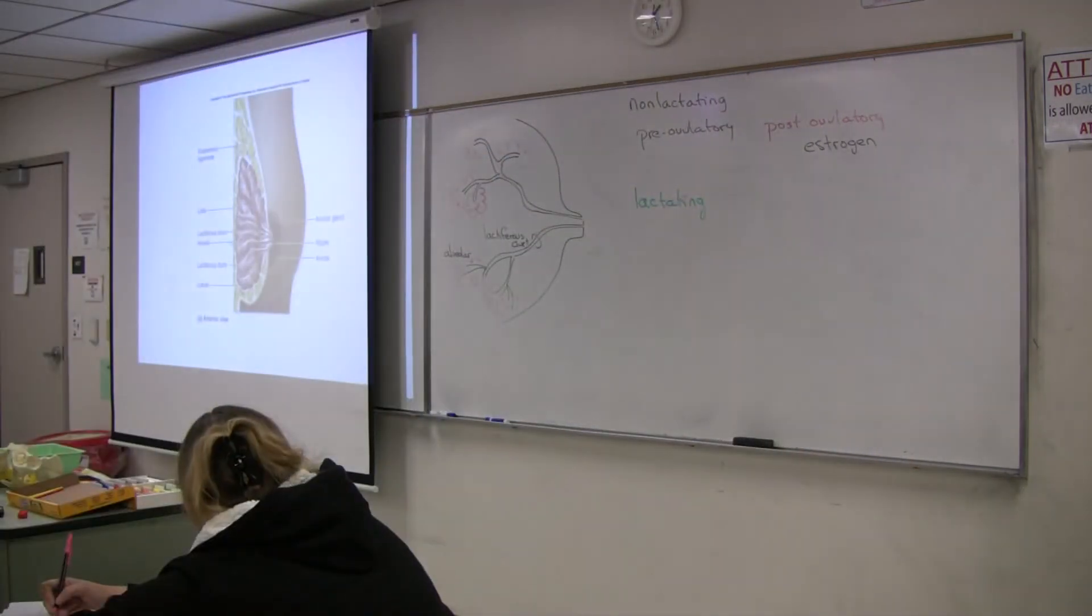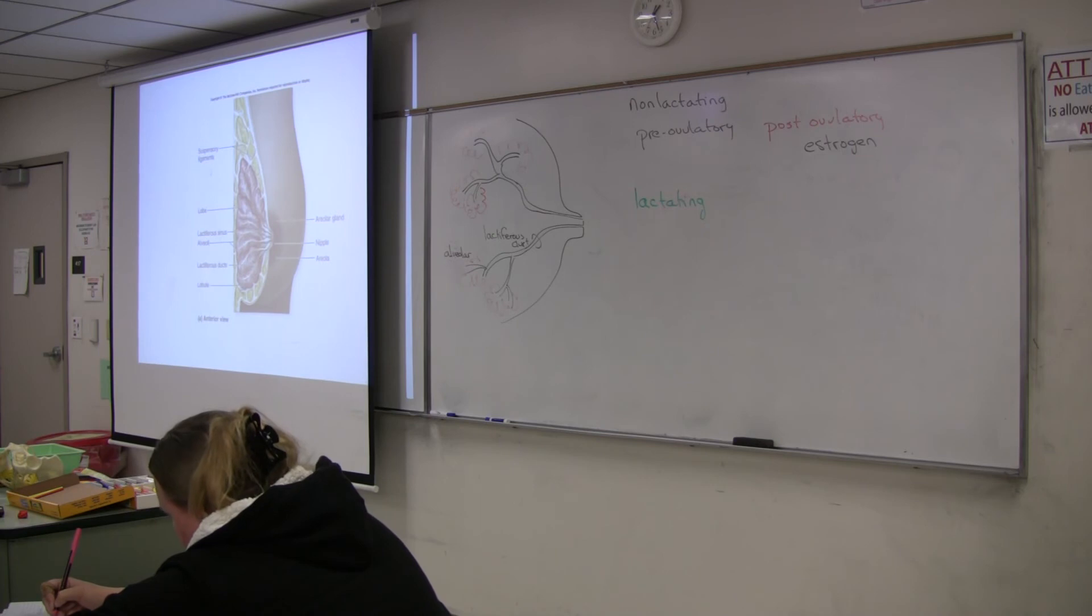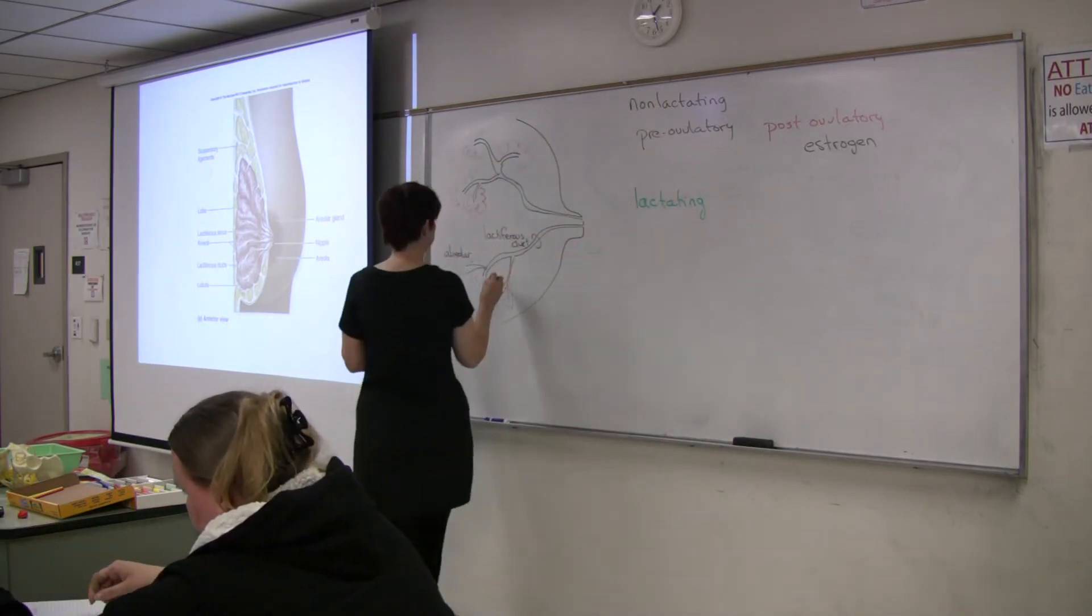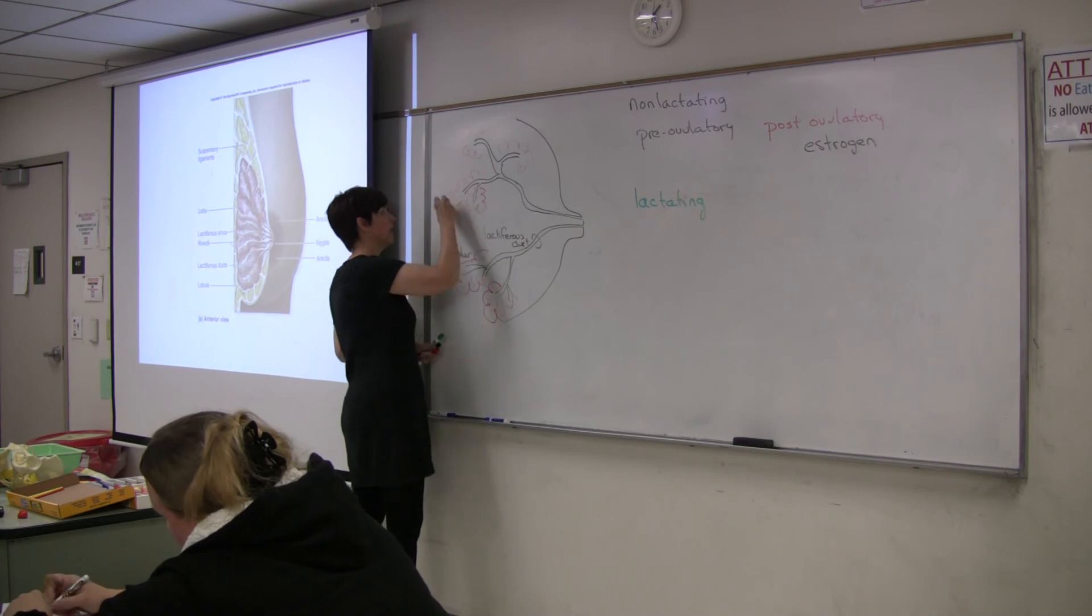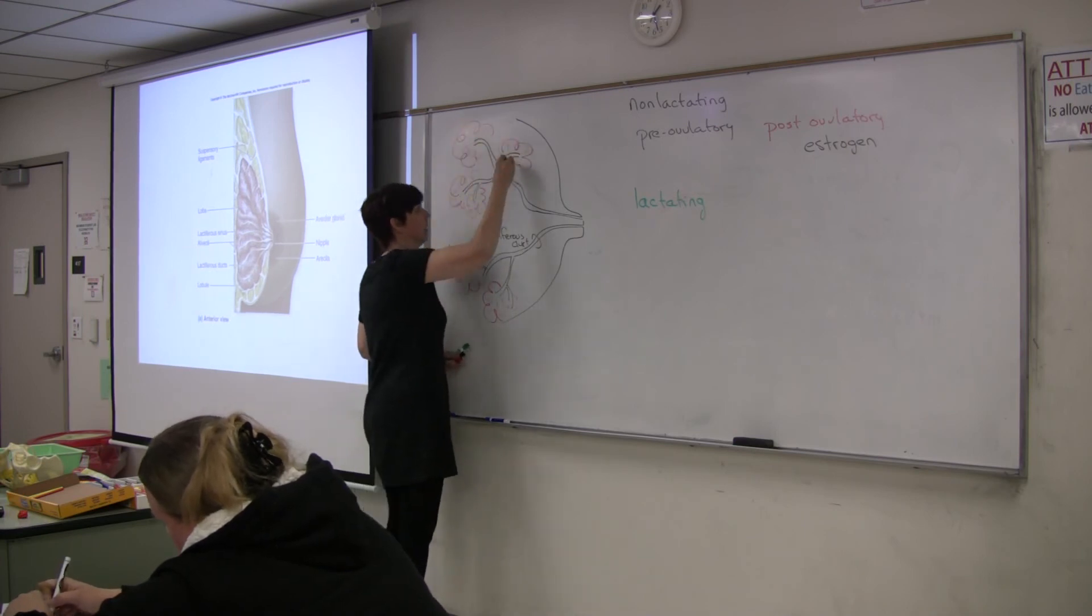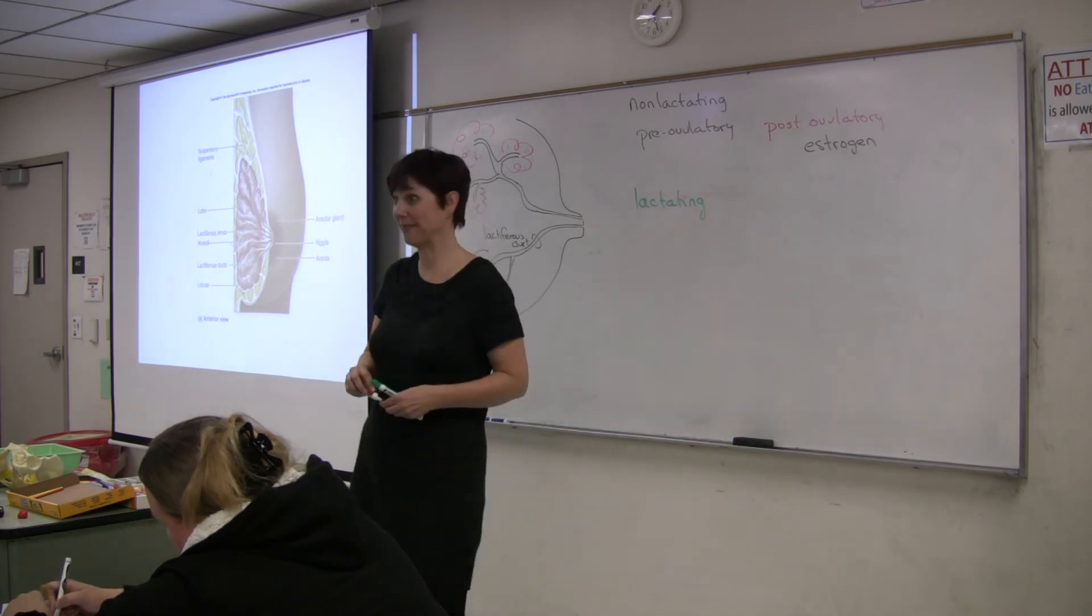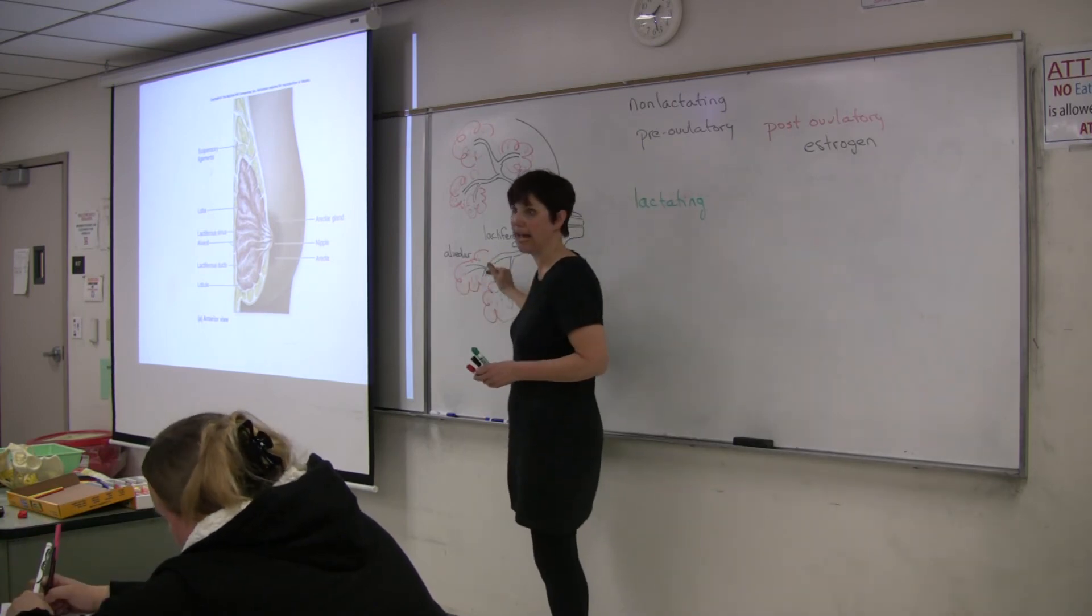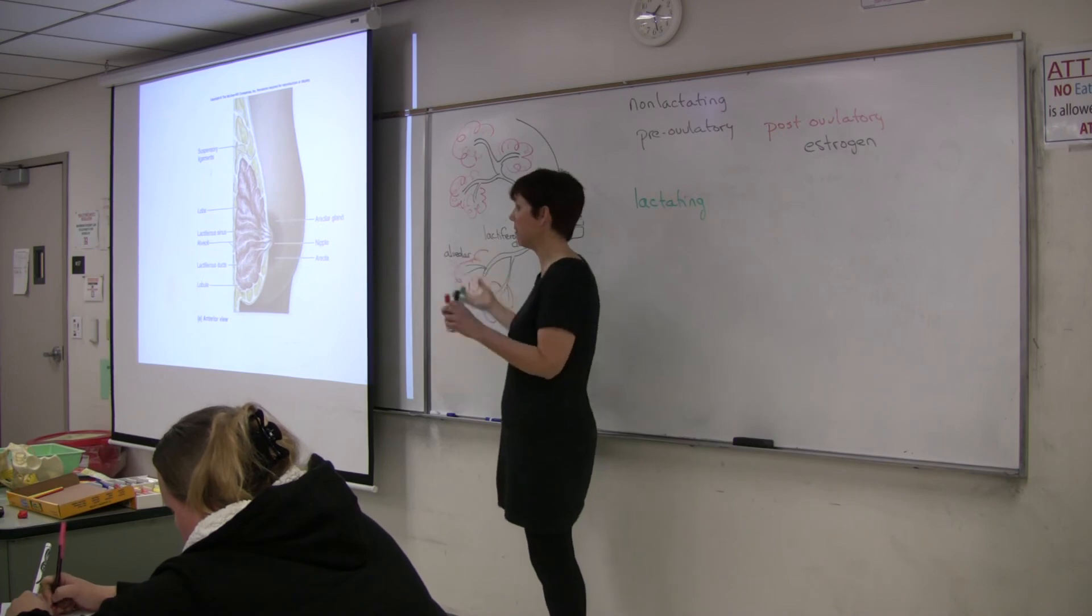The duct cells would proliferate and actually change and start becoming secretory cells. What I've drawn in red matches the red for post-ovulation and would be the cells that develop under the influence of estrogen. That's going to happen every month. Some women, this creates tender breasts. They are called secretory cells, but they aren't actually making any milk or milk protein. Then as estrogen levels drop, these secretory cells disappear and we're back to the duct cells. That change occurs every month.